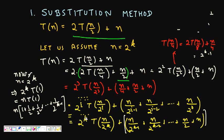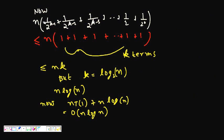Since N = 2^K, the term 2^K · T(N/2^K) becomes N · T(1), which is a constant C·N. The remaining sum has K terms: N·(1/2^(K-1) + 1/2^(K-2) + ... + 1/2^0). There are K terms in the bracket.